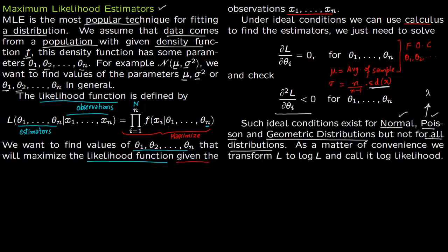This is not true for all distributions. You could come up with your own density function, and in that case calculus may fail — perhaps the function is not smooth enough. If calculus fails, you can still ask your computer to keep fitting different values of theta as a maximization problem. As a matter of convenience, rather than maximizing L directly, you take the log of L, called the log-likelihood. The advantage is that the product now becomes a sum, which is easier to deal with.